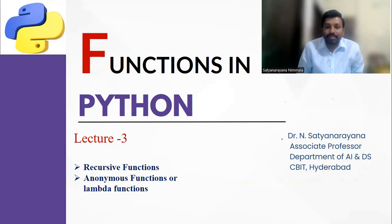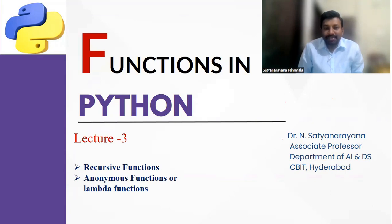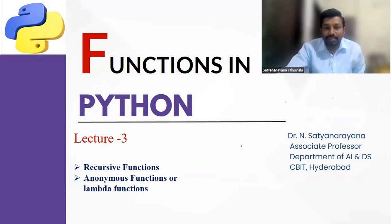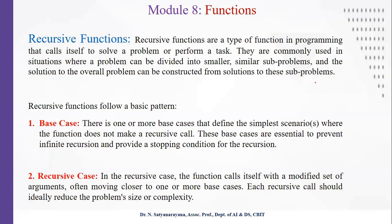Certain problems, like the Towers of Hanoi problem, can be solved easily with recursion rather than writing an iterative approach. One has to know how the recursive function works and how recursive calls are really managed in computer memory. Lambda functions are special functions defined using the keyword lambda. The advantage of a lambda function is that when we define a normal function there is overhead associated with jumping the execution flow from the function call to the function definition.